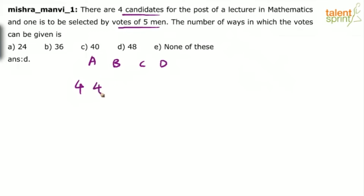The second voter can also give his vote in four ways. Remember, the confusion of repetition or non-repetition should not arise, because the same candidate can get all five votes. This is a case of election — we are trying to select a candidate for the post of a lecturer using a voting system. So all five men can vote for any one of these persons: A, B, C or D. This means repetition is allowed.